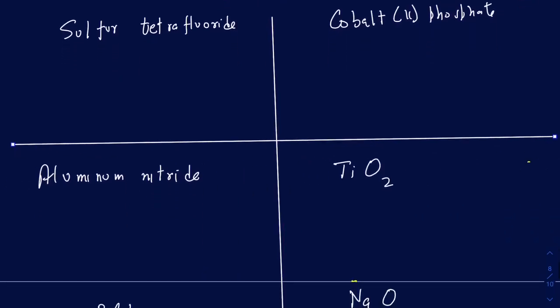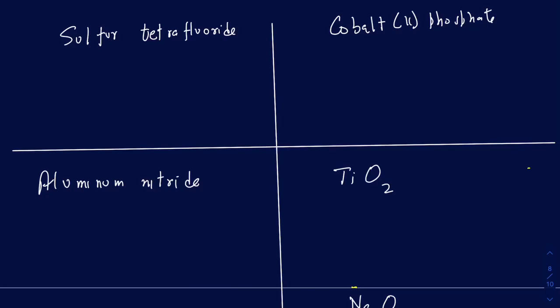Let's look at the first example: sulfur tetrafluoride. The name is given, so the question is what the formula will be. First, figure out if it's ionic or covalent. The prefix 'tetra' is only used in covalent compounds, so this is a covalent compound. There's no prefix in front of sulfur, meaning we only have one sulfur. Tetra means four, so we have four fluorides. The formula is SF4.